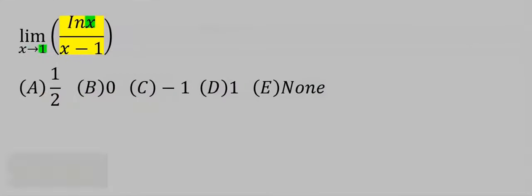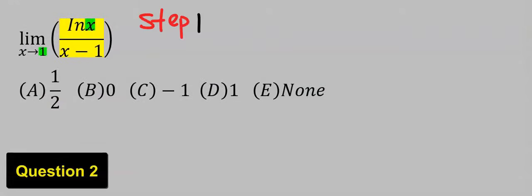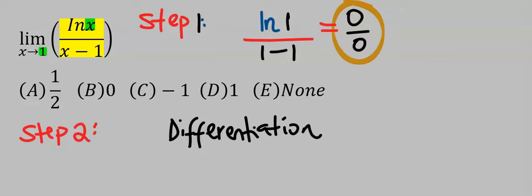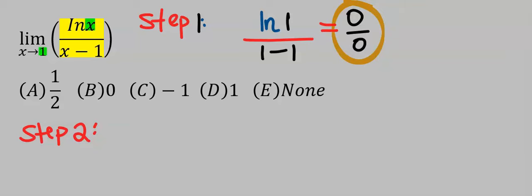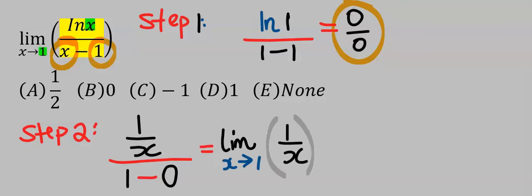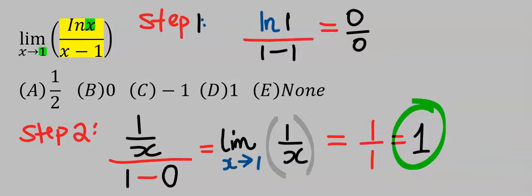Consider this next question. Step number one: apply direct substitution — we get 0 over 0. Step number two: apply L'Hôpital's rule. The only option here is differentiation. Differentiate ln x and you get 1 over x. Differentiate x and you get 1. Differentiate 1 and you get 0. Taking the limit as x tends to 1, your answer is 1, which is option D.